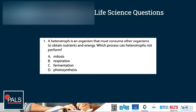Here is the first question. A heterotroph is an organism that must consume other organisms to obtain nutrients and energy. Which process can heterotrophs not perform? Mitosis, respiration, fermentation, or photosynthesis? This is an assumed knowledge question. Since we have a heterotroph, which must consume other organisms to obtain energy, this organism will not be able to do photosynthesis, since photosynthesis allows an organism to make its own food and energy. So D is the correct answer. Organisms that can perform photosynthesis are called autotrophs.